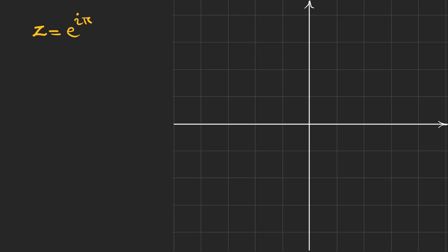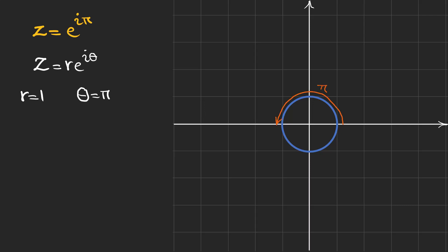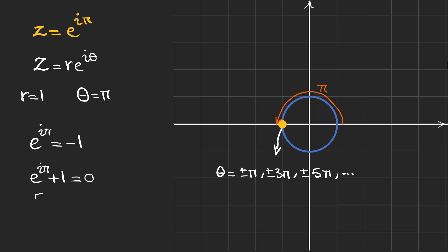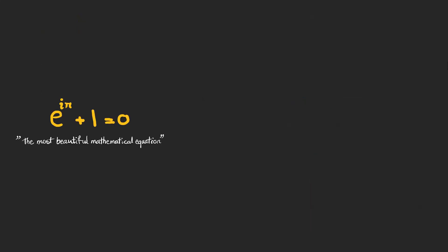Now let's find e to the power of i pi on the complex plane. Using the general polar formula, r equals 1, so our point lies on the unit circle. With angle theta equal to pi, we arrive at the point minus one on the plane. Therefore e to the power of i pi equals minus one, which gives us Euler's identity — the equation we discussed at the beginning of this video.